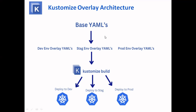In this given diagram, you can see the base YAML. If you want to add something extra, then with the help of overlays — maybe in the development stage, staging environment, or production environment — the overlay YAMLs are added. Then with the Kustomize build, they are deployed to the respective development, staging, or production environment in Kubernetes.